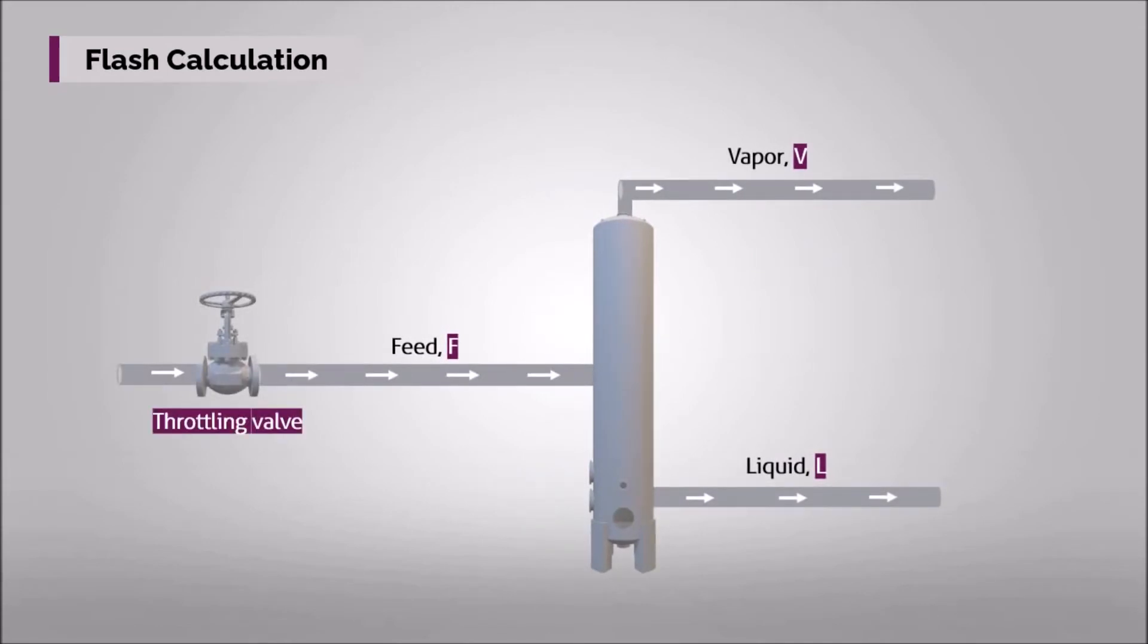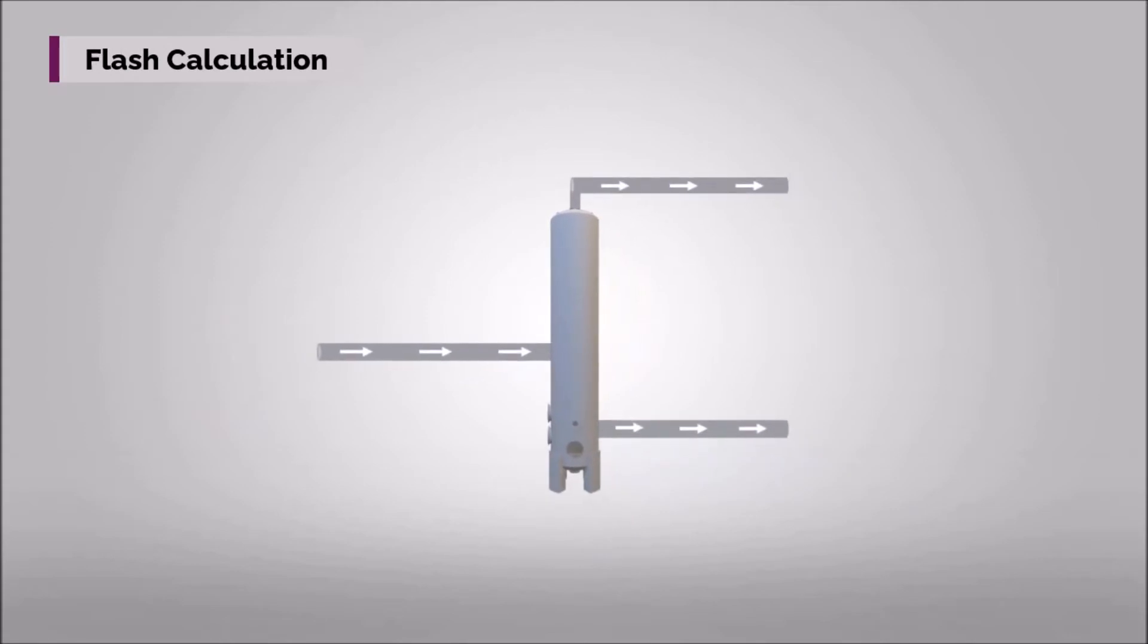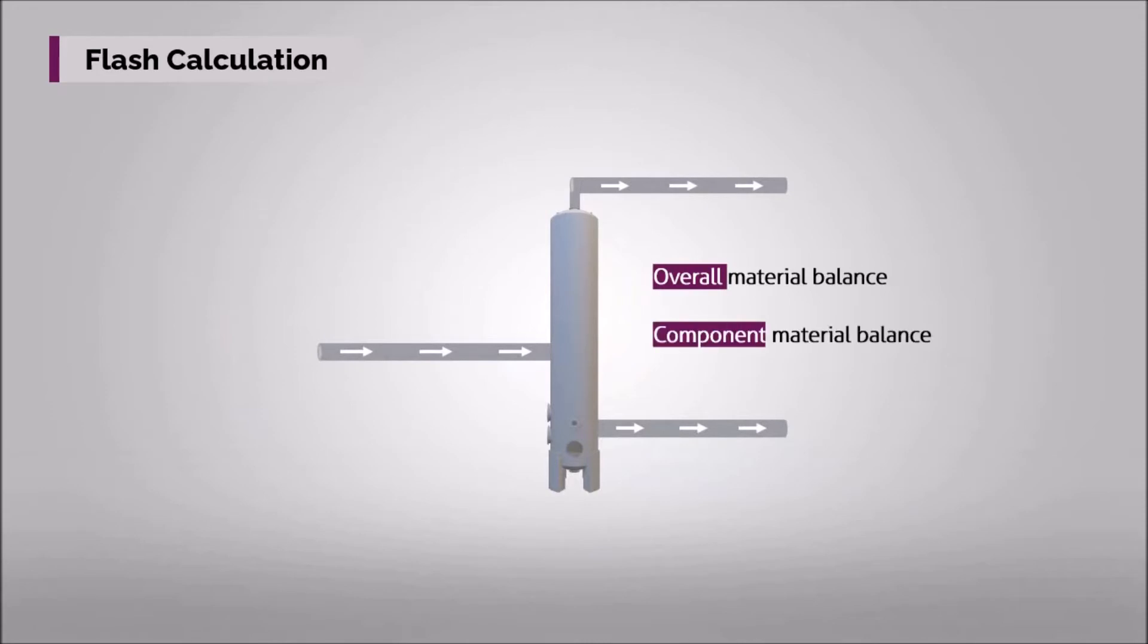As we only deal with the feed of separator, we do not consider the throttling valve in this video. In flash calculation, you will always need to encounter the overall and component material balances around the separator. To carry out the material balances around the equipment, you will first have to give some notations to the streams and their compositions.